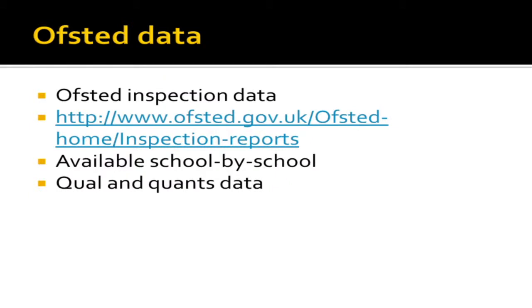The second data set is the Ofsted database. From their website you can get individual inspection reports on any school. What Ofsted allows you to do is look at each school's inspection data, and interestingly you can have both qualitative data and the quantification of that — schools being given grades for things like teaching quality and leadership. It's broader than the performance tables in that you can look at different facets of schools, including things beyond academic outcomes like safe environments and well-being.